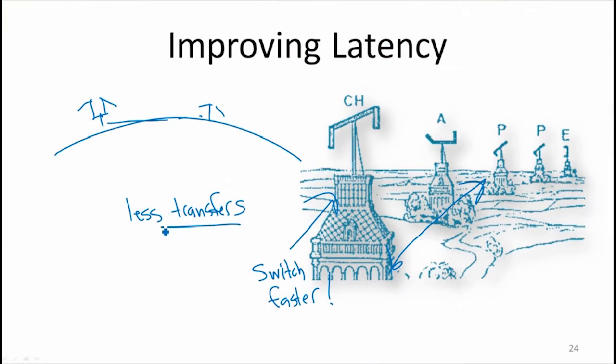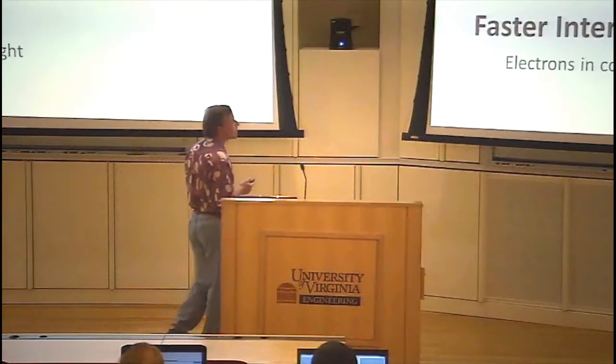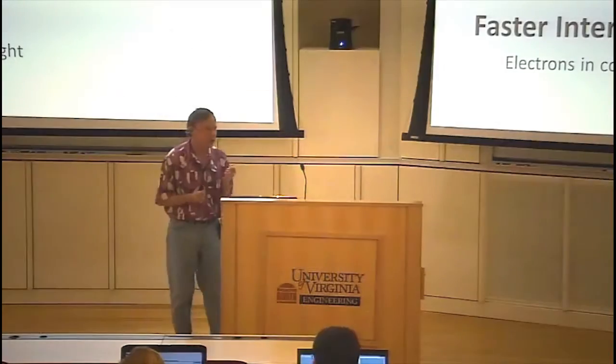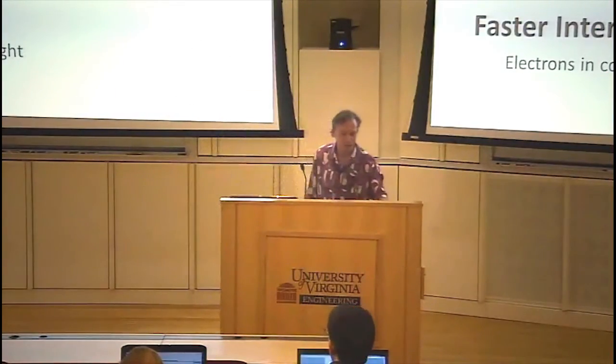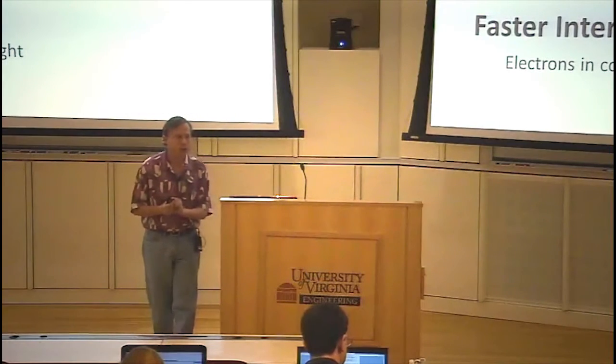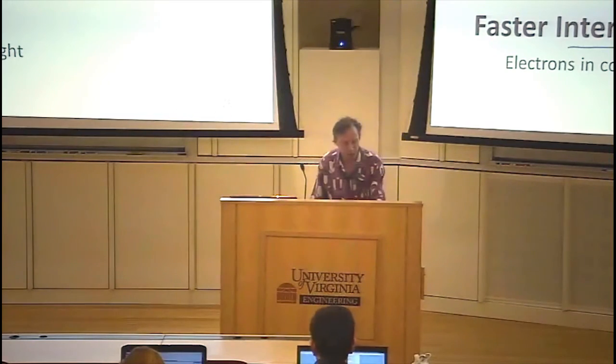So the only other thing we can really do, we can have fewer transfers. We can make the transfers faster. Maybe the time it takes to travel between the transfer points. In this case, we're not going to make that faster. That's already the speed of light. We don't have any other real options. These are the same for any kind of communication. We're going to make our network faster if we have fewer transfers. If we don't want to build towers tall enough but still deal with the curve of the earth, we can use wires, because wires can curve. And if we have fiber optic cables, then we can make light go around corners.